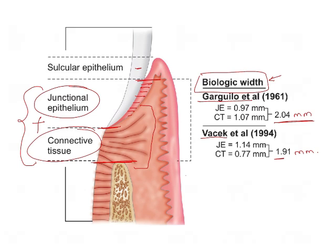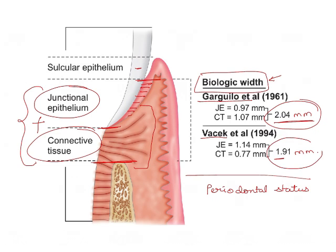What is the significance of biologic width? The biologic width is important in maintaining the periodontal status of a tooth. If the value of biologic width is reduced — that means if this epithelium is compromised or if the connective tissue is compromised — it leads to bone loss and therefore recession.